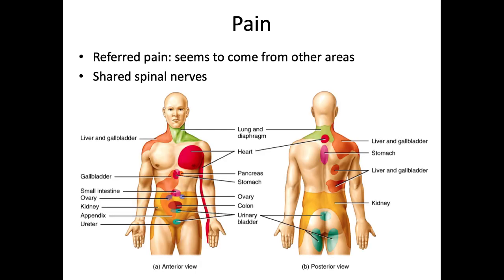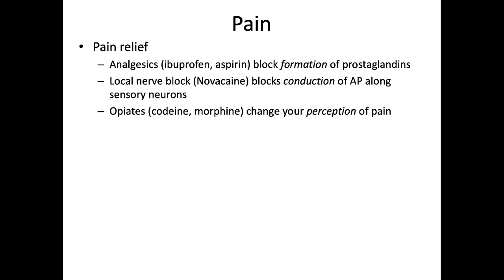One type of chronic pain is referred pain, where the pain seems to come from somewhere else in the body. A classic example is the pain felt in the left arm during a heart attack — although the heart is damaged, the pain is felt down the left arm due to shared pathways of the spinal nerves. We have a couple of ways to relieve pain. Analgesics such as ibuprofen or aspirin block the formation of prostaglandins so they cannot bind to nociceptors. A local nerve block such as novocaine blocks conduction of the action potential along sensory neurons. Opiates like codeine or morphine change your perception of pain so it seems less bad.